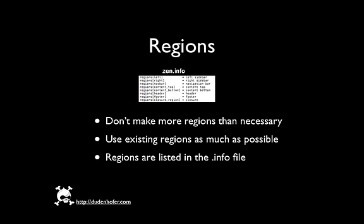Here's a look at the section in the Zen.info file. You'll notice on the left it says regions bracket, and within that bracket is the PHP call. So where it says left or right, you're going to put a dollar sign in front of that for the string — that will make the call for this region. The right side shows the region name within the admin blocks. So when you're looking at the admin pages for the block setup, the right side shows: left sidebar, right sidebar, navigation bar — all of these will be listed as the region name.